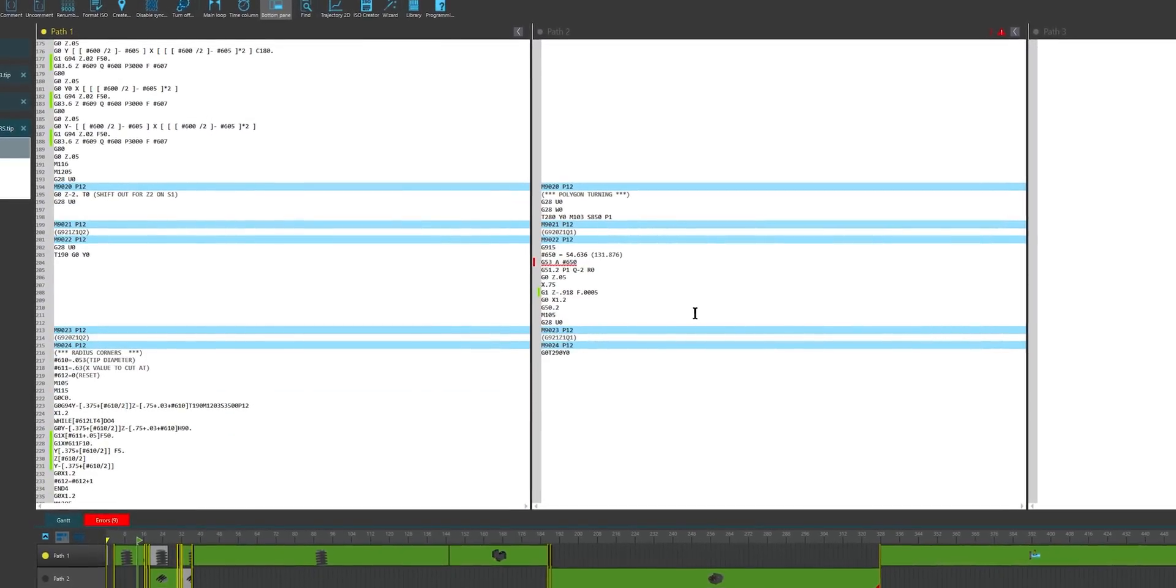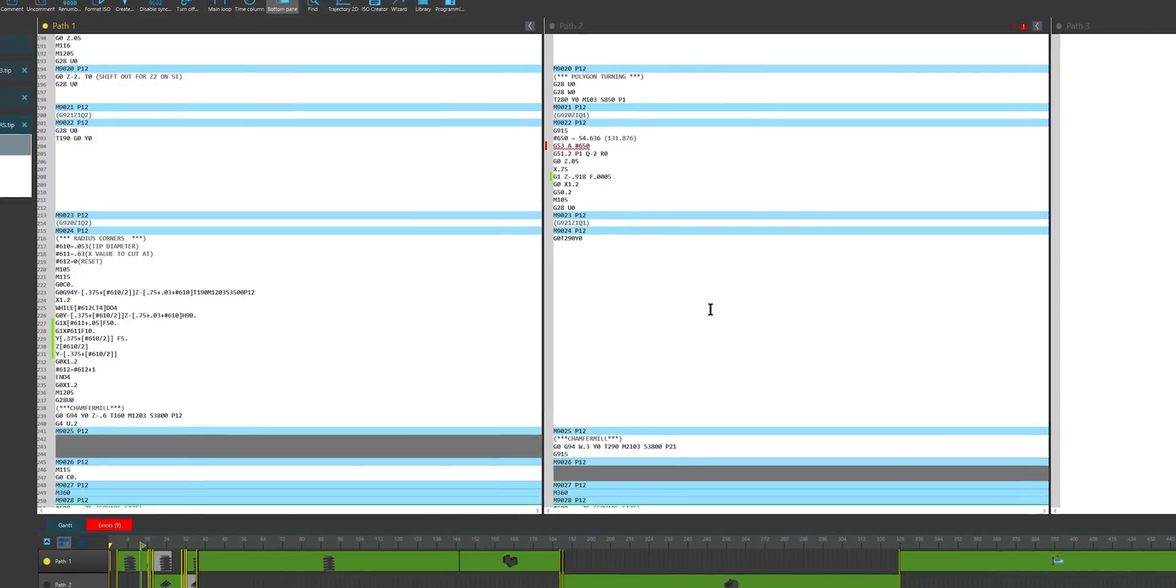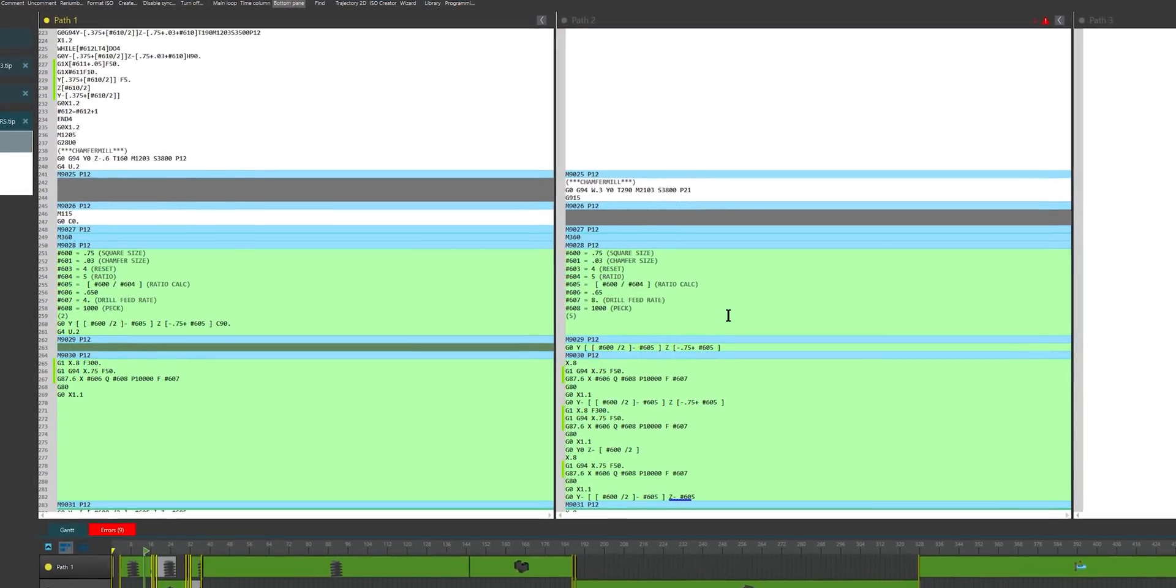And then it comes in and does the polygonal turning, and then it goes back and does all the double drilling, which will be the numbers that you see happening on the sides of the part.